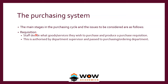The main stages in the purchasing cycle and the issues to be considered are as follows. First, requisition: staff decide what goods or services they wish to purchase and produce a purchase requisition. Whichever department wants a good has to raise a purchase requisition, which is authorized by the department supervisor — usually the department manager. The production employee tells the production manager, who authorizes and signs it, and then it goes to the purchasing department.